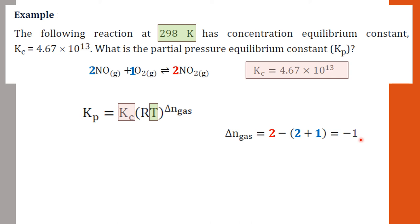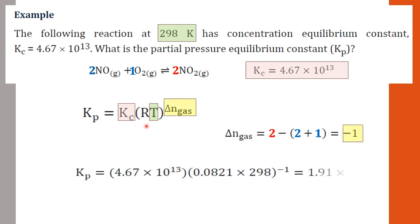Now we know everything. We substitute all the known values — Kc, R, T, and ΔnGas = −1 — into the equation Kp = Kc × (RT)^(ΔnGas). Enter all the numbers into your calculator and you will get the correct answer for Kp.